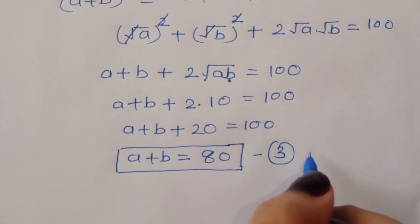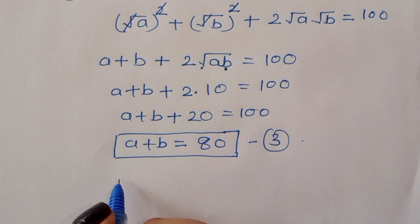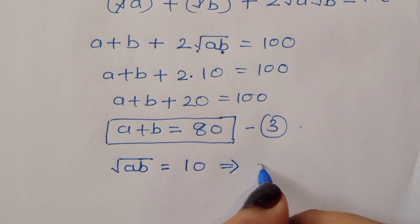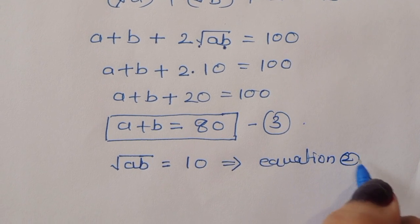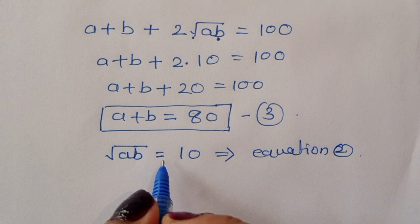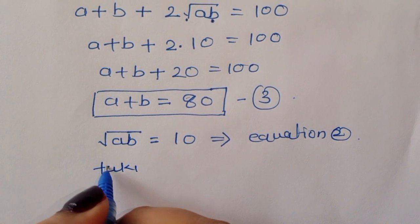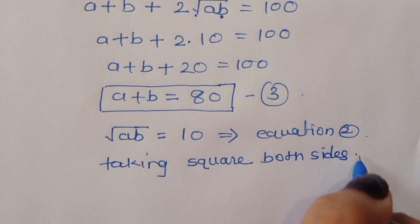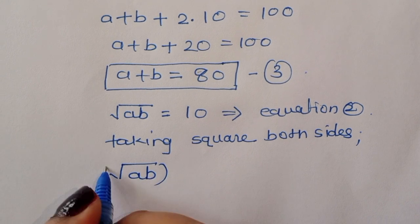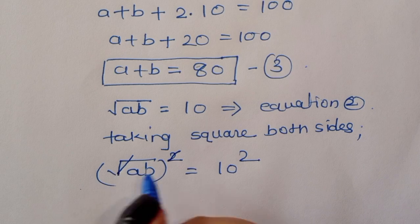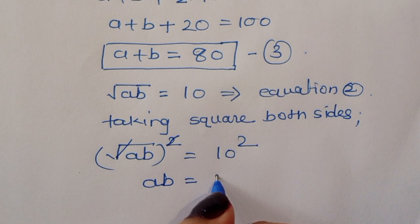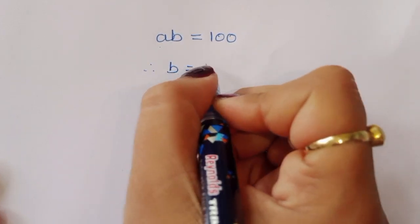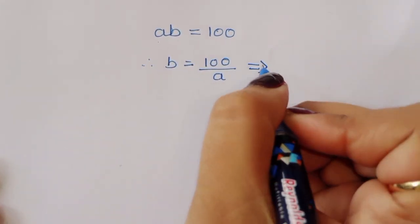Now taking equation 2, √(ab) = 10. Squaring both sides, we get (√(ab))² = 10², so ab = 100. Therefore b = 100/a. This is equation number 4.